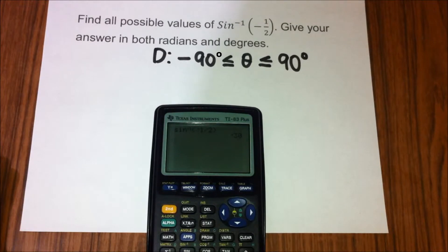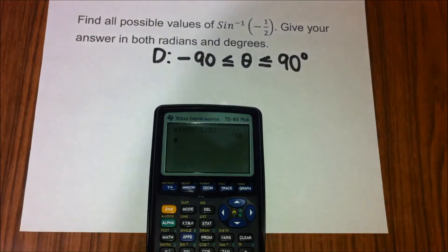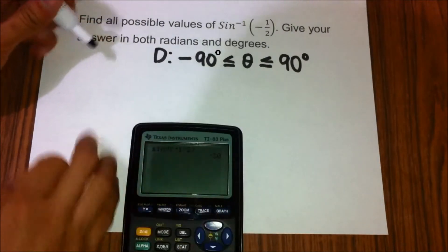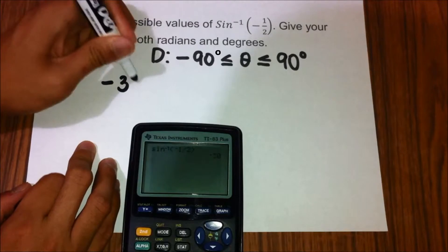Yes, negative 30 degrees is inside the domain so we won't have to worry about it. So the first value is negative 30 degrees.